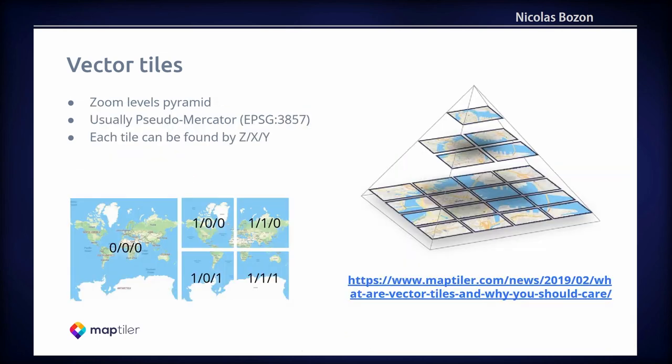Let me start with a bit of theory about the vector tiles technology. Vector tiles usually come in the Mercator reference system. It's convenient because the entire planet can just fit in one square at zoom level zero, and each tile can then easily be split into four smaller tiles at the next zoom level. Each tile can be found at the ZXY address — Z is for zoom, X for column, and Y for row.